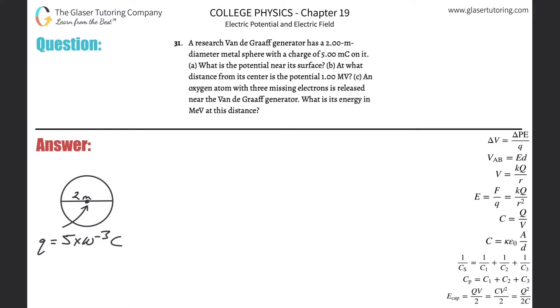Number 31. A research Van de Graaff generator has a 2 meter diameter metal sphere with a charge of 5 millicoulombs on it. Letter A: What is the potential near its surface?